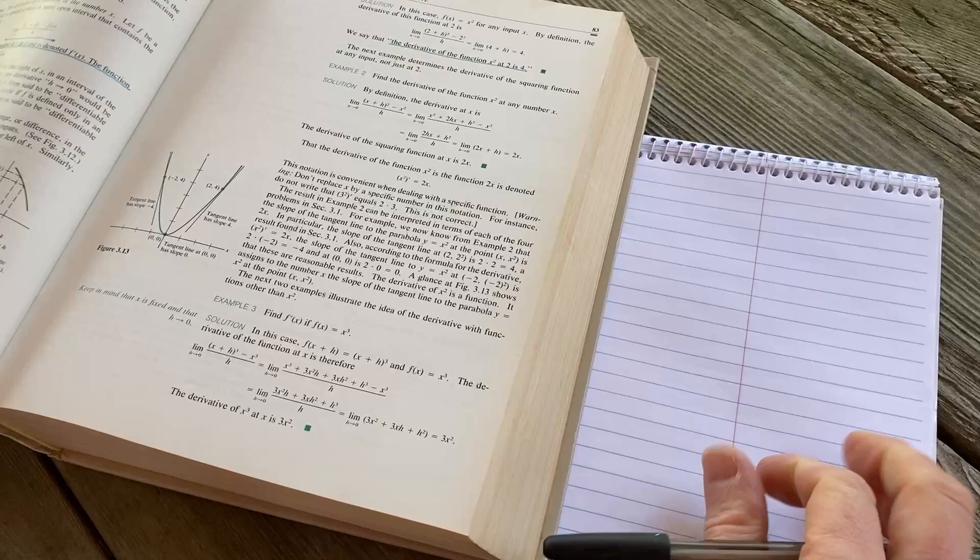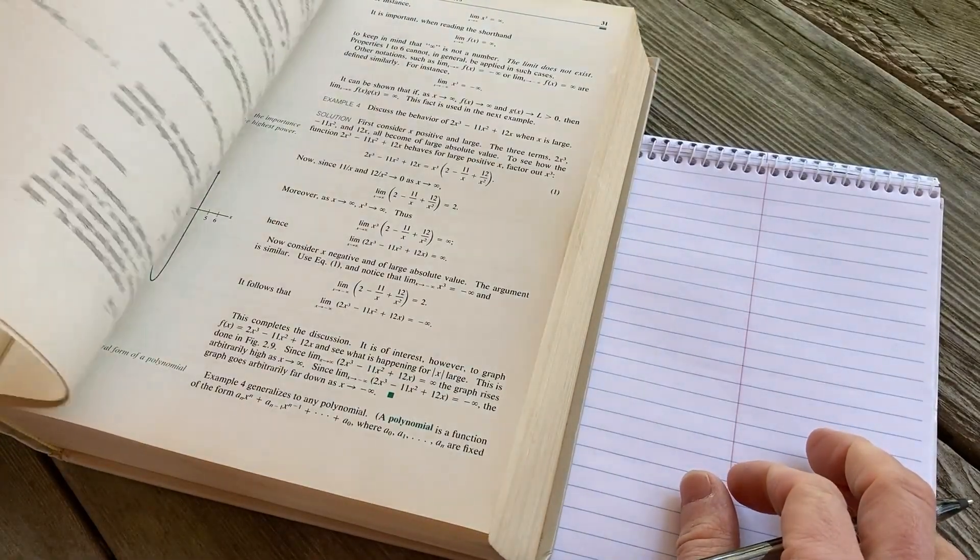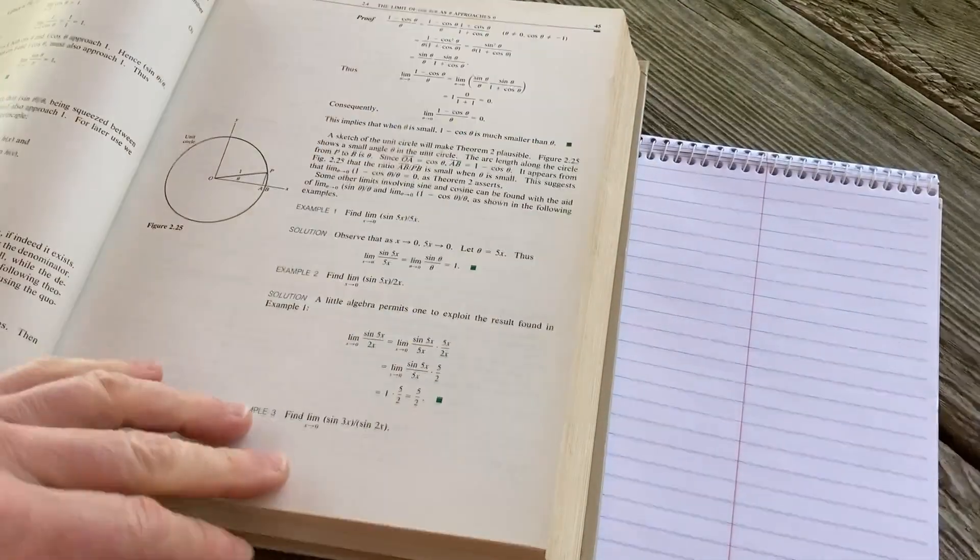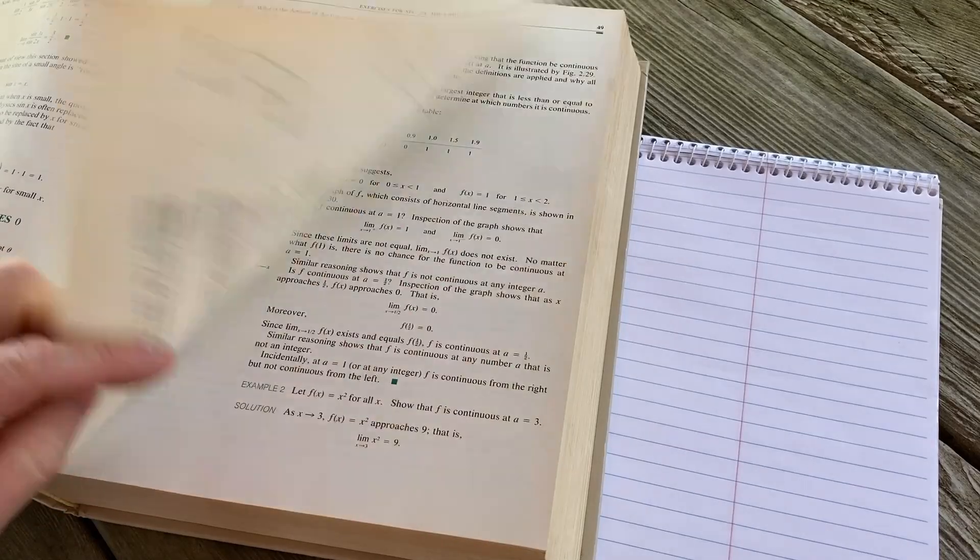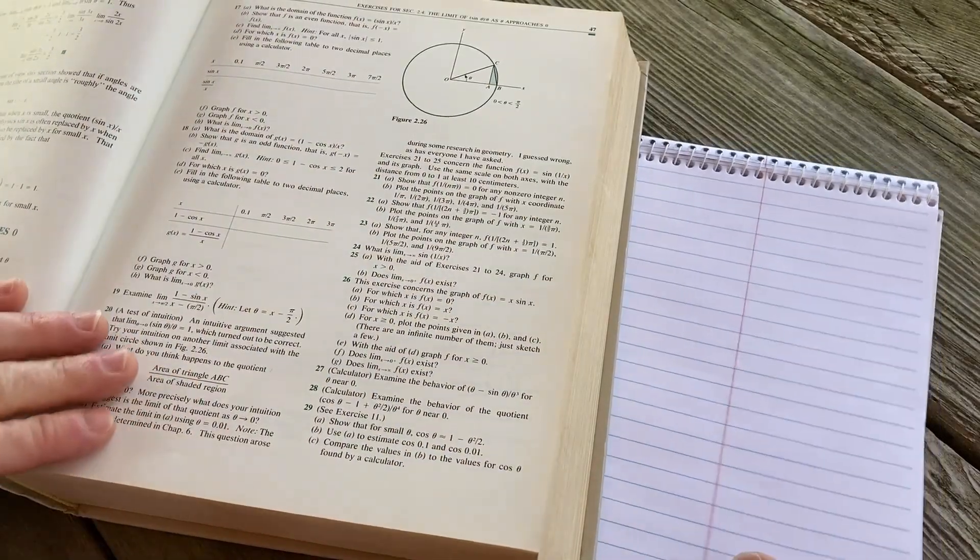So I was just thinking we could do some math from here. I'll just find something simple to do. Something we can work through so you can see the kind of mathematics that this book contains. It's pretty easy. Let's do something a little bit harder. Here we go. Let's try something like this. So I haven't done this problem yet but we can figure it out together and then we can get the answer.